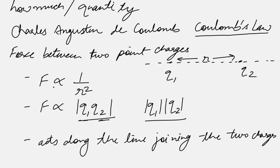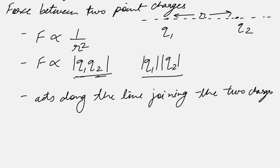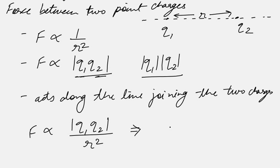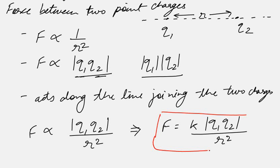The magnitude varies as given by the first two statements. If we combine the two proportionalities, force is proportional to |q1||q2| divided by r squared. Introducing a proportionality constant k to convert to an equality, F equals k times |q1||q2| divided by r squared. This is the equation for Coulomb's Law, giving the magnitude of force between two point charges separated by distance r placed in vacuum.